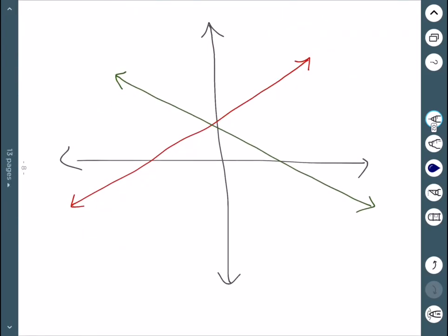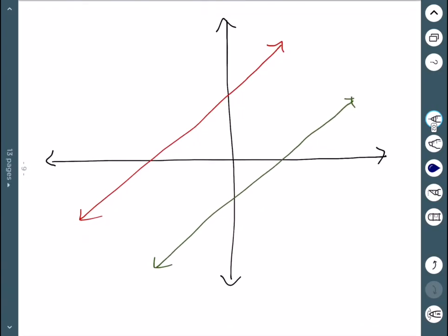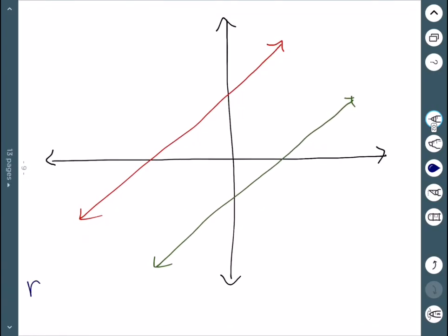The first way would be for the lines to intersect once. In this case, there would be one solution. So that is the possibility. The lines could also be parallel. In this case, they never intersect, so there's no solution.